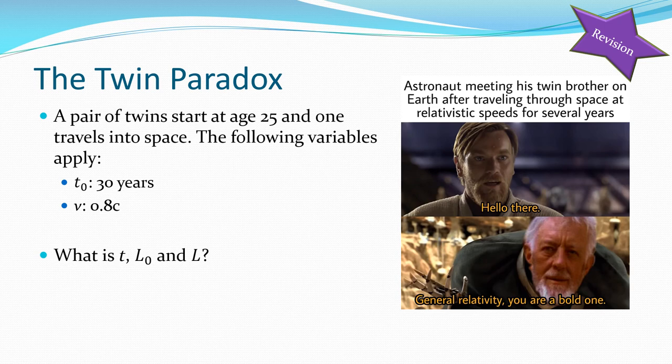The first paradox is the twin paradox, where a pair of twins start at age 25. One travels off into space at a very large speed and returns after some period of time, having aged less than their identical twin who stayed stationary on Earth. We're going to look at why the one that traveled off into space aged less than the one on Earth.